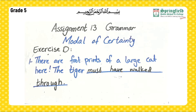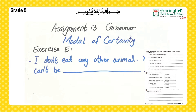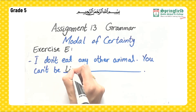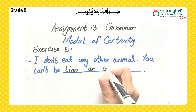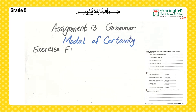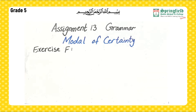Exercise E: Clues are given — read them and complete the sentences. Example: 'I don't eat any other animal' — so you can't be a lion or a carnivore. Complete the sentences in the same way. Exercise F: Write sentences describing something that can't be true, something that must be true, and something that might be true.